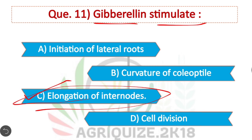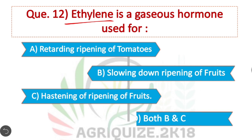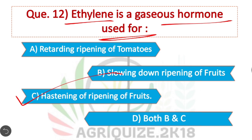Question 12: Ethylene is a gaseous hormone used for — Option C is correct. Ethylene accelerates the ripening of fruits; it increases the rate of ripening of fruits.